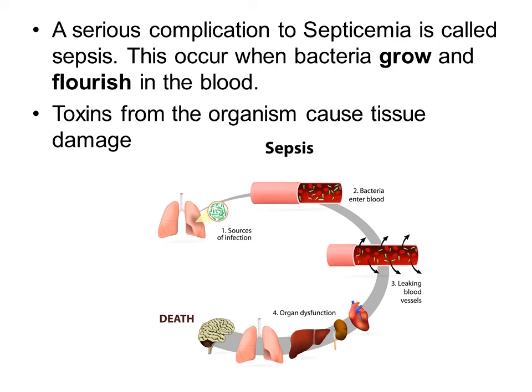A serious complication to septicemia is called sepsis. This occurs when bacteria grow and flourish in the bloodstream. Toxins from the organism can cause tissue damage. Septicemia is a broad category — you can have low septicemia versus high septicemia. High septicemia will be considered sepsis, which is a more severe form of septicemia.